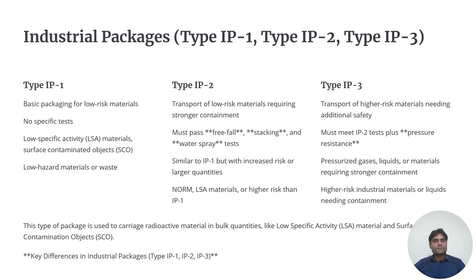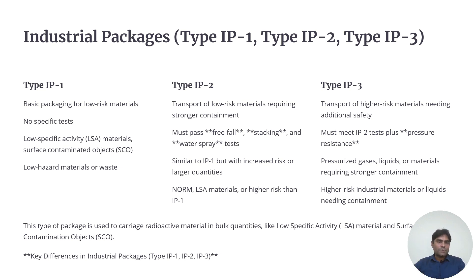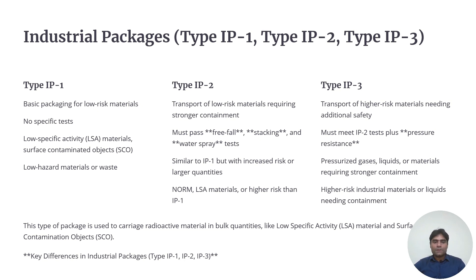The industrial package has three categories: IP1, IP2, and IP3. They involve different levels of radioactive materials and are mainly used for industrial purposes. IP1 is for low-risk material, IP2 for moderate risk, and IP3 for higher-risk materials. The different properties are given in this table, so you can pause the slides and have a look.